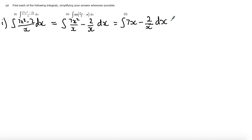At this point I can integrate. So integrating 7x, I get 7x raised to the power by 1 gives me 7x squared and divide by that power. So I get 7x squared over 2 minus 2. Integrating 2 over x gives me 2 log x. And then just remember to put a constant plus C at the end.